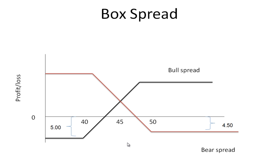If the price is, say, $45, what happens? You'll make $5 on your bear spread position—selling at $50, buying at $45. You're also making $5 from your bull spread position—buy at $40, sell at $45. So $5 plus $5 is $10. You make $10 regardless of what happens.